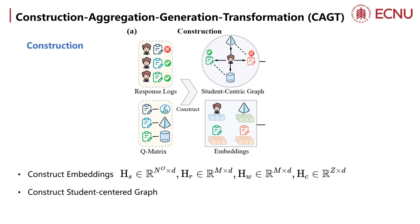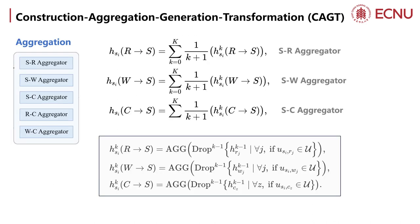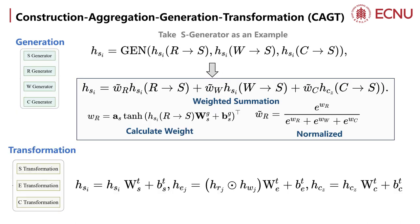Next, we introduce the CEDD process. In the construction phase, we encode four types of embeddings to model students' accesses with right patterns, accesses with wrong patterns, and concepts. Simultaneously, the Student Center Graph ICG is constructed. In the aggregation phase, all nodes undergo message passing based on the ICG. In the generation phase, representations of student accesses and concepts are generated through weighted submission of messages received from different types of nodes.